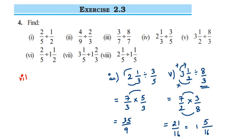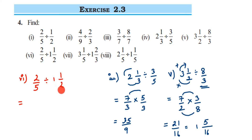Sixth question: 2 by 5 divided by 1 and 1 by 2. Remember, in the previous question the mixed fraction was first and we converted it then divided. But here, the mixed fraction is the second number, so you must first convert it to an improper fraction before taking the reciprocal — two different steps.